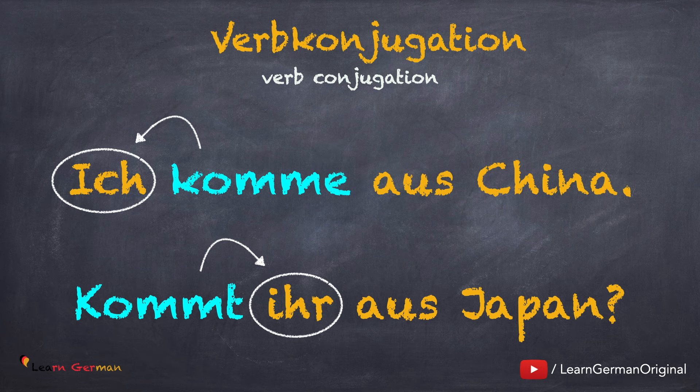Verb conjugation in German is very simple — you take the verb stem and simply add the ending to it. The ending you choose depends on the subject. We will be covering these in detail in the next lessons.